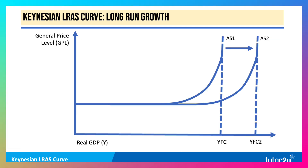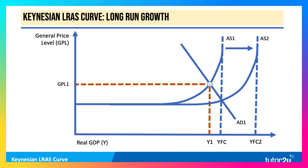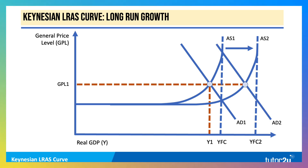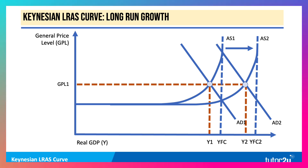Growth in this model is shown by an outward shift of the Keynesian aggregate supply curve, leading to an increase in full capacity output. This means that if we initially have a level of AD1, the economy can be in equilibrium at Y1. If you have growth of potential output — shown by the shift in AS — that means you can operate with a higher level of aggregate demand consistent with a given price level. So the economy could reach an equilibrium of Y2, without there being any necessarily increase in inflationary pressure.